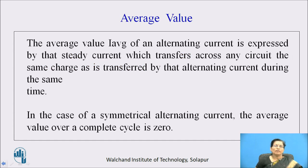Definition of average value is: the average value of an alternating current is expressed by that steady current which transfers across any circuit the same charge as is transferred by that alternating current during the same time.